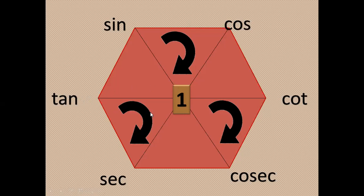The second identity: tan square theta plus 1 is equal to sec square theta. The third identity: 1 plus cot square theta is equal to cosec square theta.